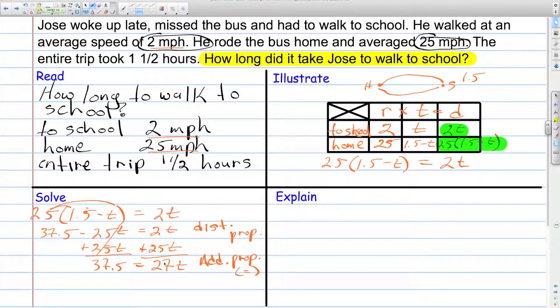And finally, I have to get rid of this coefficient of 27 by dividing 27 by each side. And that's the division property of equality. And that gives, and you can use a calculator to do this, that gives on the calculator 1.38. And that 8 does repeat.